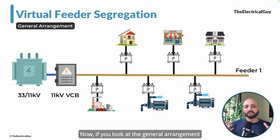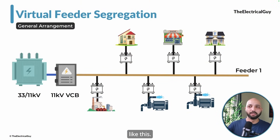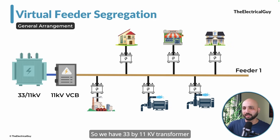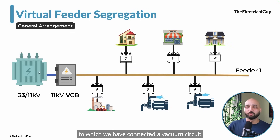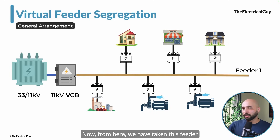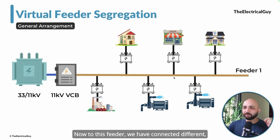If you look at the general arrangement of a feeder, we are talking about 11 or 12 kV feeders. We have a 33/11 kV transformer to which we have connected a vacuum circuit breaker or 11 kV switchgear. From here we have taken feeder 1, and to this feeder we have connected different loads.